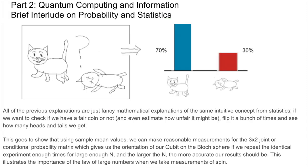All of the previous explanations are just fancy mathematical explanations of the same intuitive concept from statistics. If we want to check if we have a fair coin or not, and even estimate how unfair it might be, flip it a bunch of times and see how many heads and tails we get. If we want to know just how dead or alive the cat actually is, just repeat the probabilistic experiment of opening the Schrodinger cat box over and over again and see a tally up how many cats were dead and how many were alive.